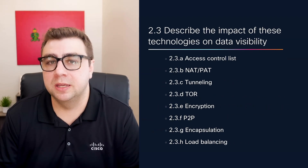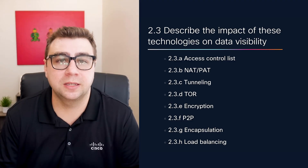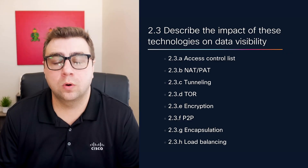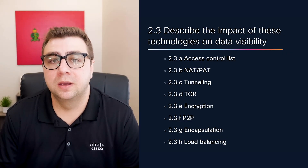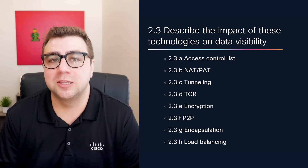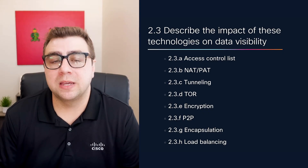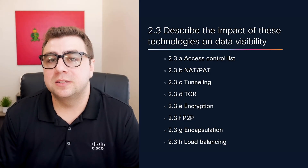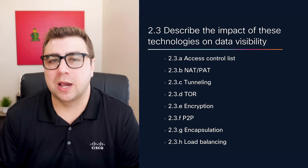This domain dives into how certain technologies impact what we can or can't see. Things like NAT, encryption, tunneling, TOR, P2P, and load balancing can all limit visibility. For example, if traffic is encrypted, you can't see payloads without decrypting it first. If a device is behind NAT, you might lose source IP tracking unless you correlate logs. The exam won't expect you to solve these problems, but it will expect you to understand why they matter.